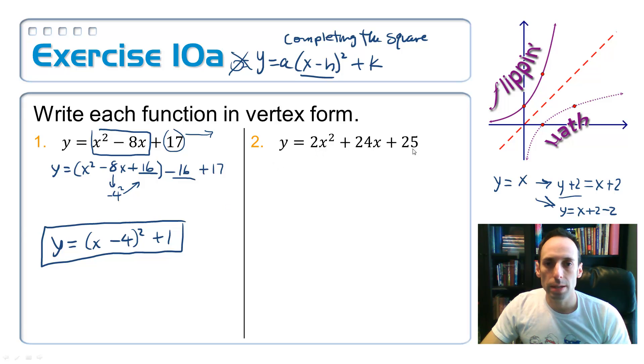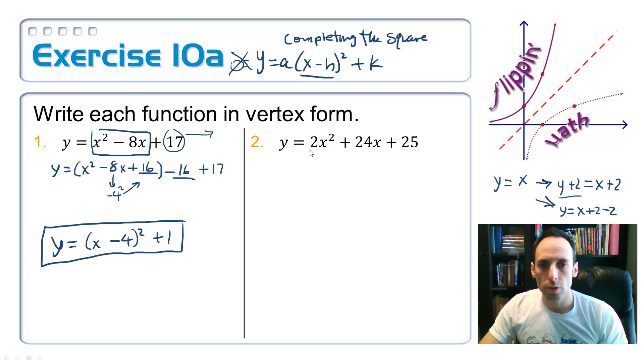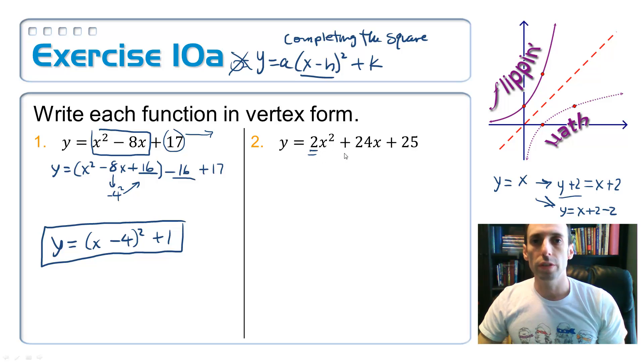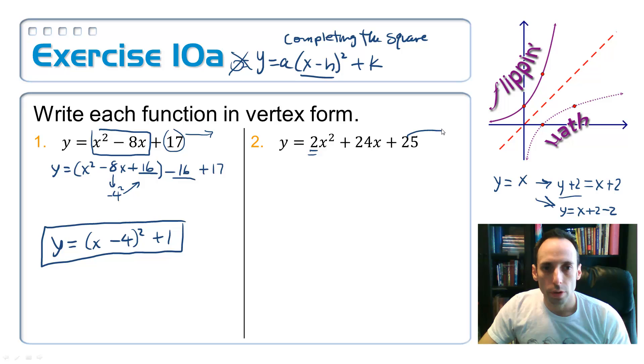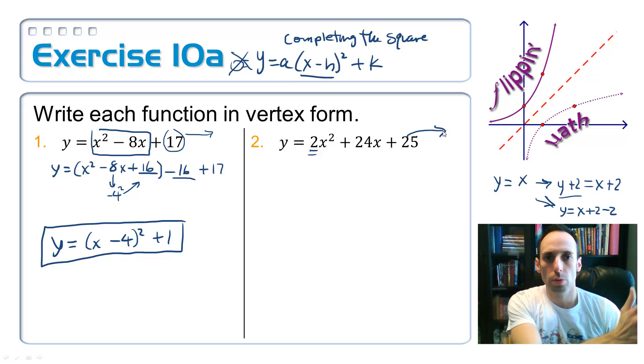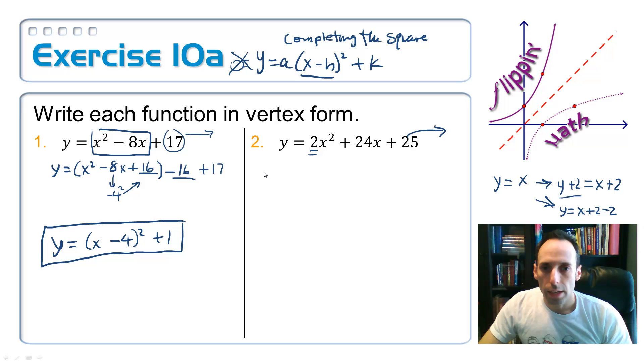All right, let's try the same kind of thing on number 2. It's slightly more difficult because we have this a value of 2. All right, so we're still going to shove that 25 off to the side there. And when I go to complete the square, I can only complete it with the leading coefficient of 1, so we're going to have to pull that 2 out. Just going to pull it out of just these two terms, not the 25.